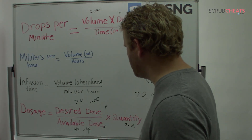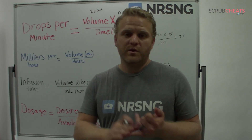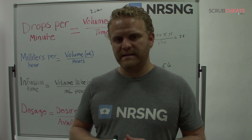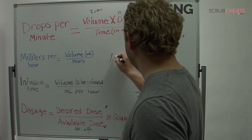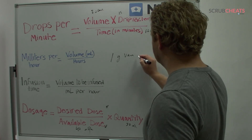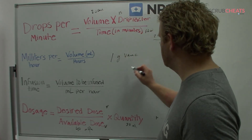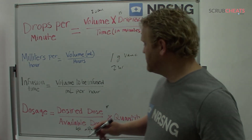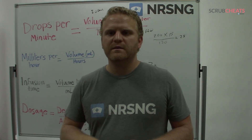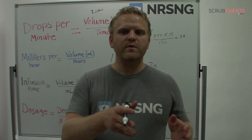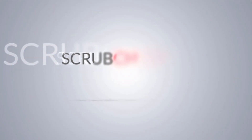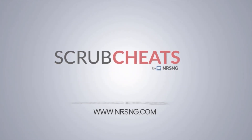Here's the example: a nurse is to administer one gram of vancomycin over two hours. The bag contains two grams of vancomycin in 500 mL. Since you need one gram — which is half the bag — that's 250 mL. You need to infuse 250 mL over two hours. Dividing 250 by 2 gives you the pump rate: 125 milliliters per hour.